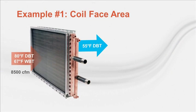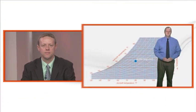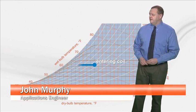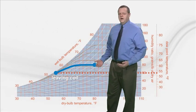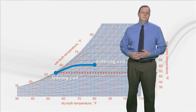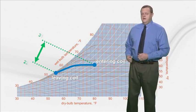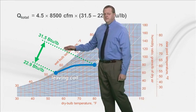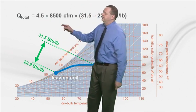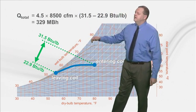For a demonstration example, the condition of air entering the coil is 80°F dry bulb and 67°F wet bulb. 8,500 CFM of air needs to be cooled and dehumidified to 55°F leaving the coil, with entering water temperature of 44°F and a 10°F temperature rise. From the entering and leaving air conditions, we can determine the corresponding enthalpies. Using the total heat equation — 4.5 times the airflow times the change in enthalpy — we calculate the total heat transferred as 329 MBH. This is the total capacity we need to select this coil to produce.